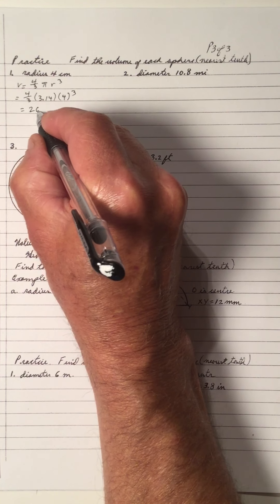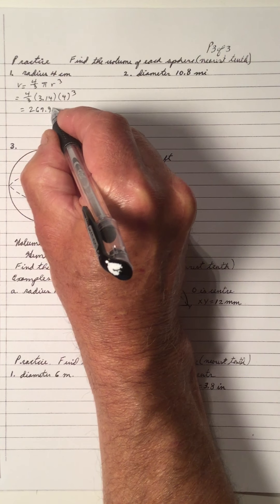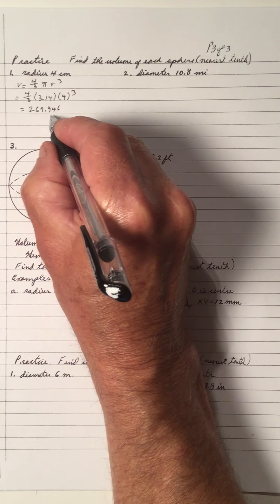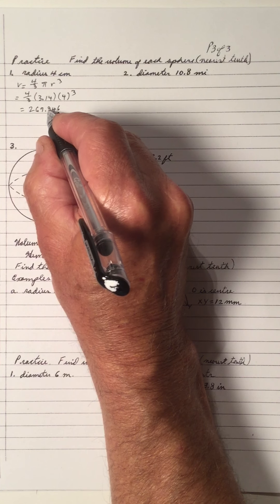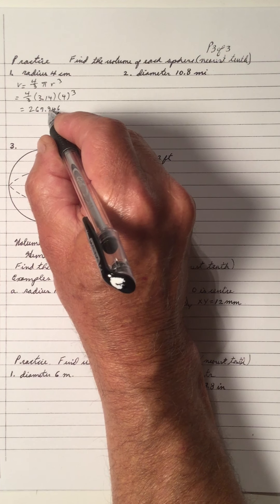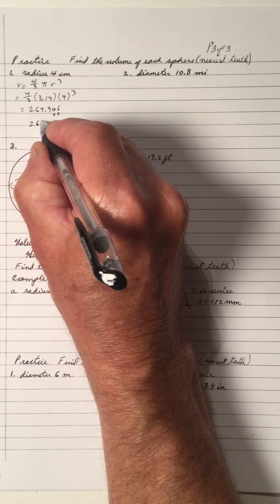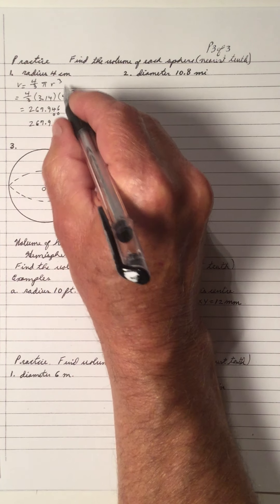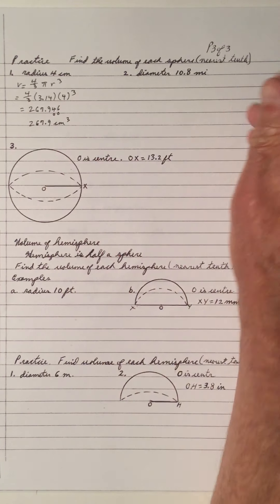That gives you 267.946. Rounding to the nearest tenth — 9 is in the tenth place, and the digit to the right is less than 5, so we don't change. So it's 267.9, and it's centimeters, so it's cubic centimeters.